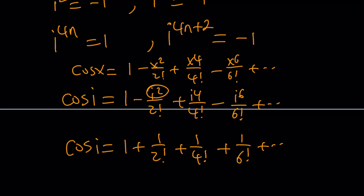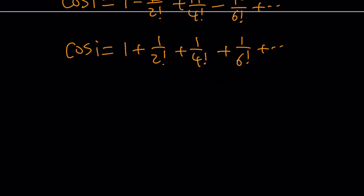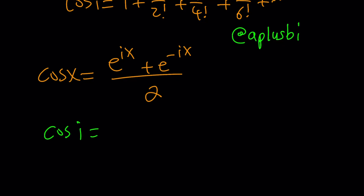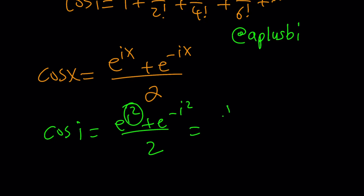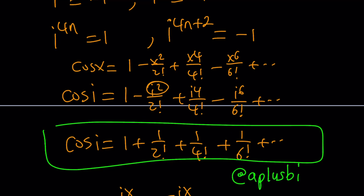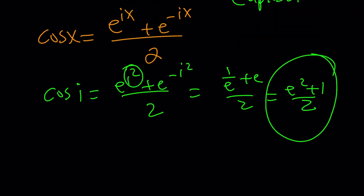But what is cosine of i? Using the formula for cosine of x, replacing x with i, we get e to the i squared plus e to the negative i squared divided by 2. Since i squared equals negative 1, this becomes e to the negative 1 plus e to the 1 divided by 2, which is 1 over e plus e over 2, and that simplifies to e squared plus 1 over 2e. Our sum equals cosine of i, so the answer is e squared plus 1 divided by 2e — the same result as Method 1.